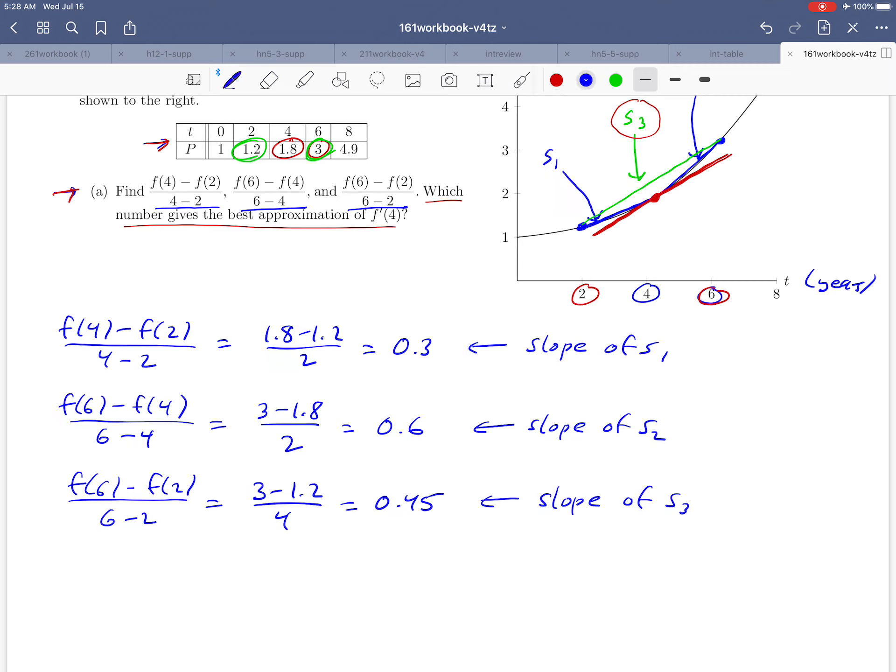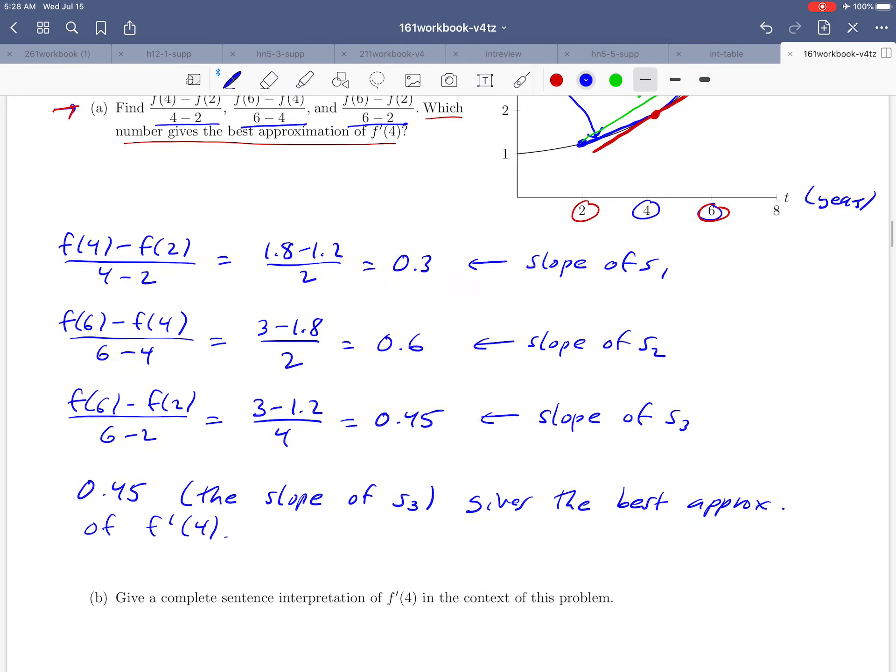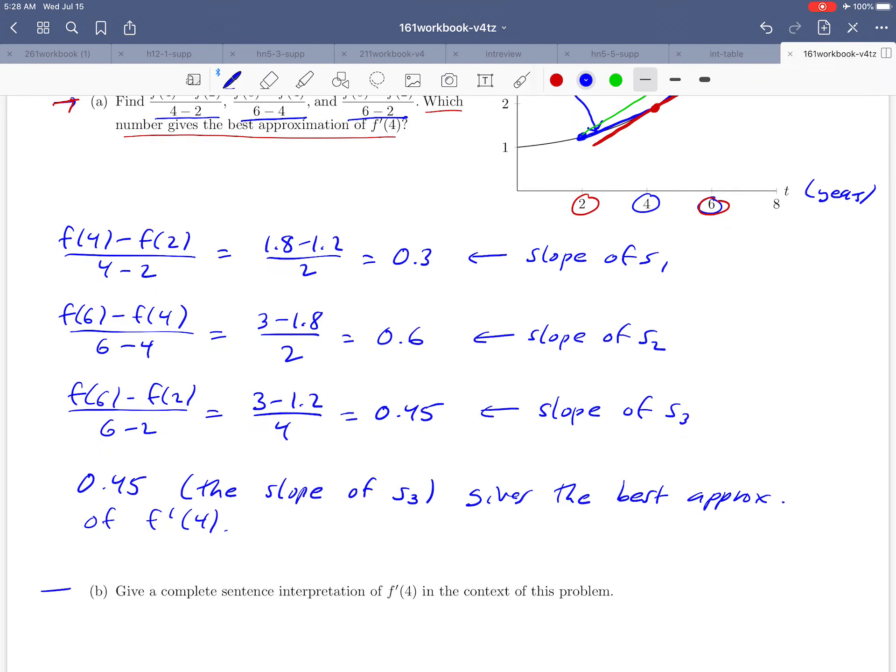So let's write that down. 0.45, which was the slope of S3, gives the best approximation of F prime of 4. And I think we've answered everything that we wanted to in part A, so let's move on to part B.